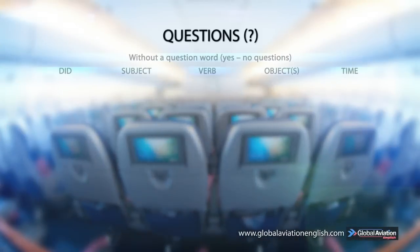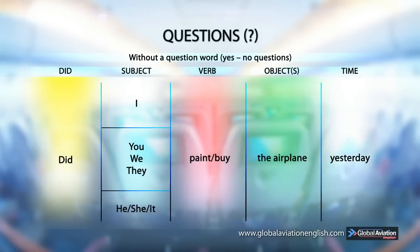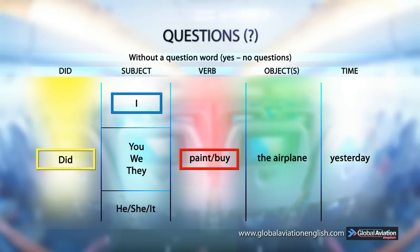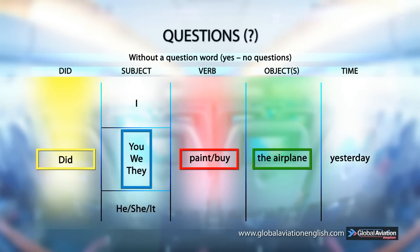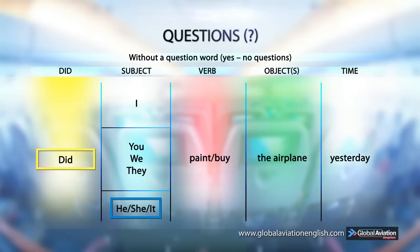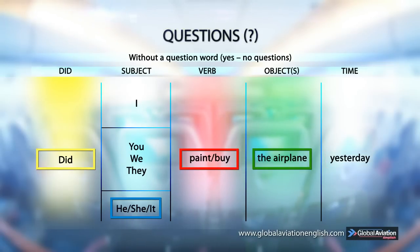Questions without a question word — yes/no questions. Did I paint / buy an airplane yesterday? Did you, we, they paint / buy an airplane yesterday? Did he, she, it paint / buy an airplane yesterday?